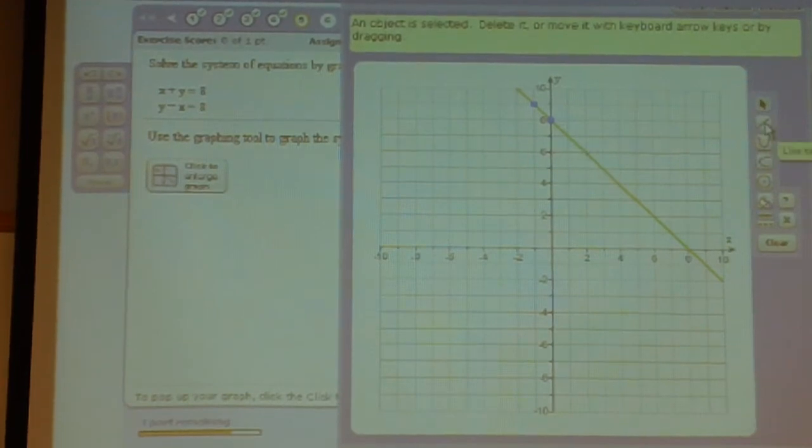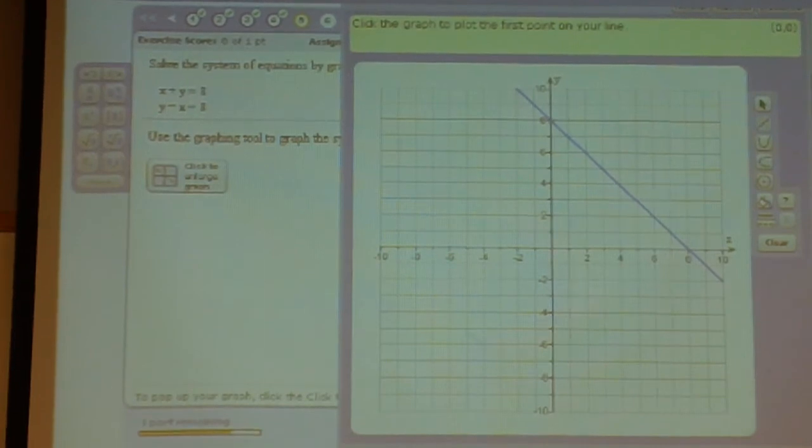Let's click the line tool again so that we can graph the second line. The y-intercept of the second line is 8. So we'll click there. From there, we will rise 1 and run 1 to the right.